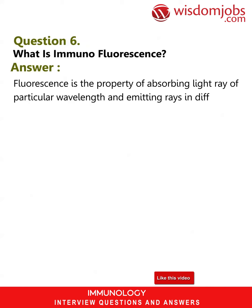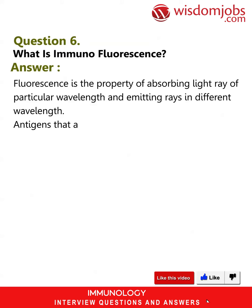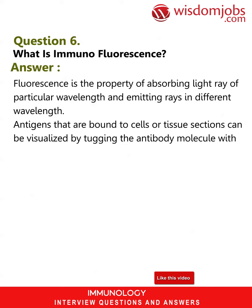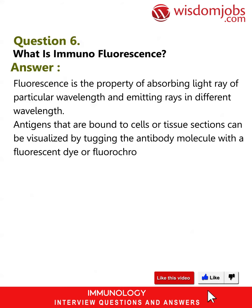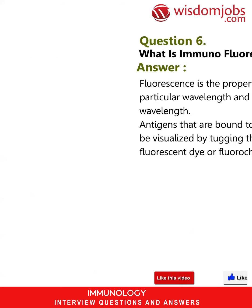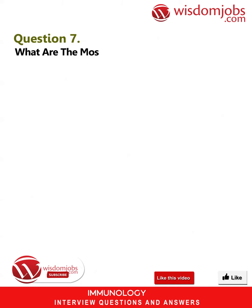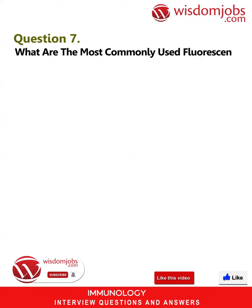Question 6: What is immunofluorescence? Answer: Fluorescence is the property of absorbing light rays of a particular wavelength and emitting rays at a different wavelength. Antigens that are bound to cells or tissue sections can be visualized by tagging the antibody molecule with a fluorescent dye or fluorochrome. Question 7: What are the most commonly used fluorescent dyes?